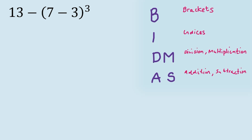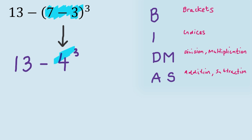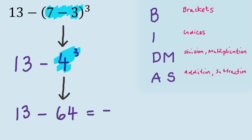When we've got multiple operations, we go through the calculation in the correct order: brackets first, then indices, then division and multiplication, then addition and subtraction. In this example we have brackets — 7 minus 3 in brackets — so we evaluate that first. The calculation then looks like 13 minus 4 cubed, because 7 minus 3 is 4. Then we keep working through BIDMAS: we've got that cubed — a 3 as an index number — so we do that next. 4 cubed is 64. So the calculation becomes 13 minus 64, which is minus 51. That's your answer.